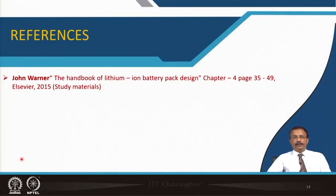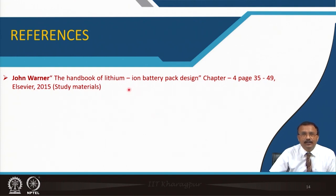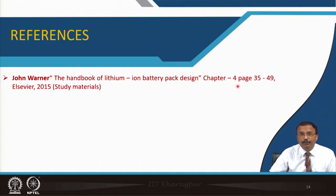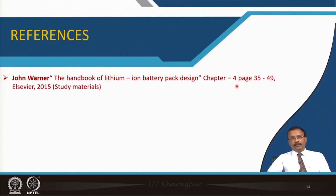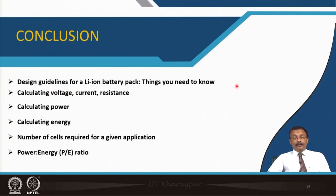This material is covered from a book by John Warner — an excellent book on lithium-ion battery pack design showing step-by-step how to build your own battery. Chapter 4, pages 35 to 49, is the important study material. In this lecture we covered design guidelines for a lithium-ion battery pack: calculating voltage, current, resistance, power, energy, number of cells required for a given application, and the power-to-energy ratio. Thank you for your attention.